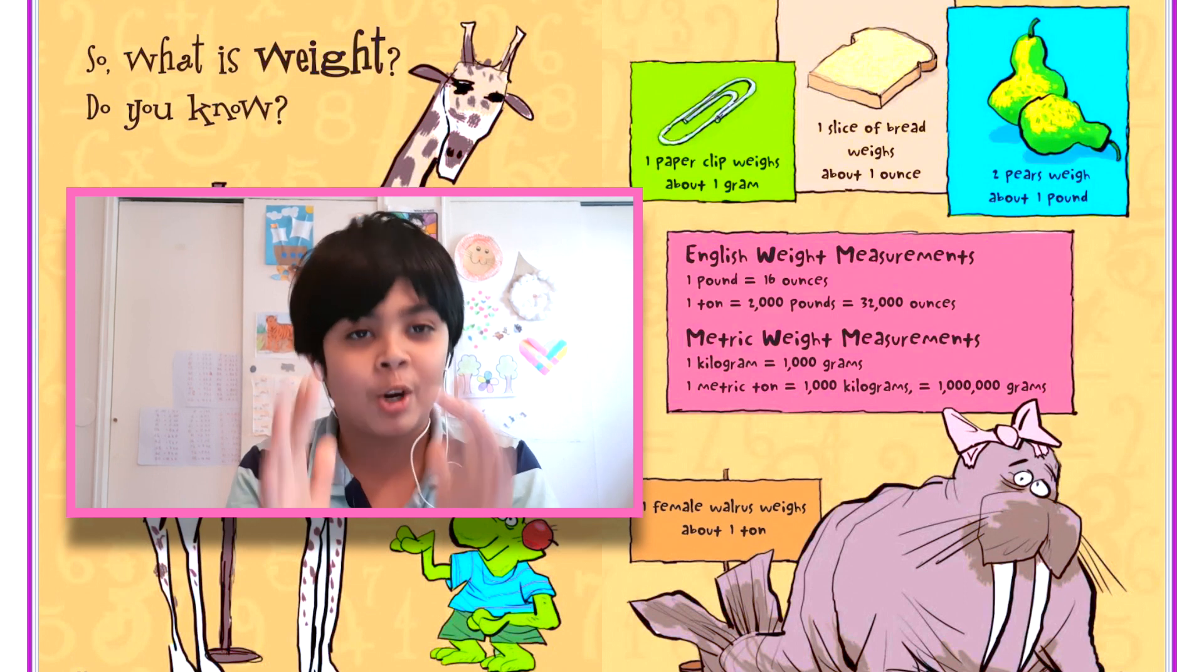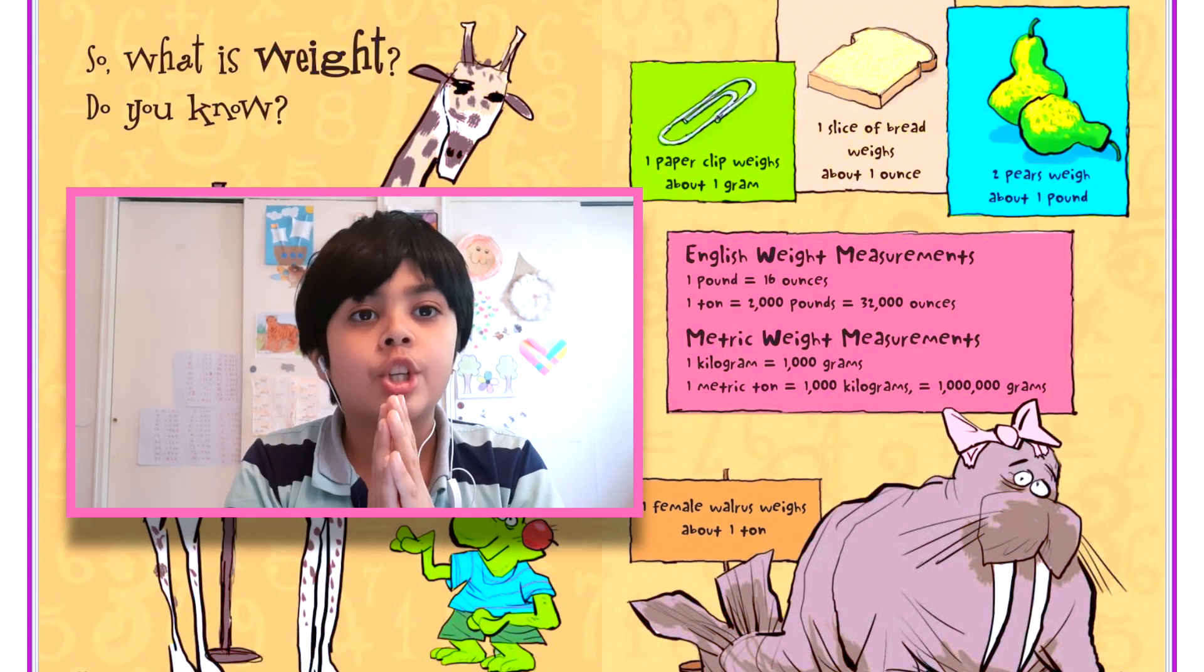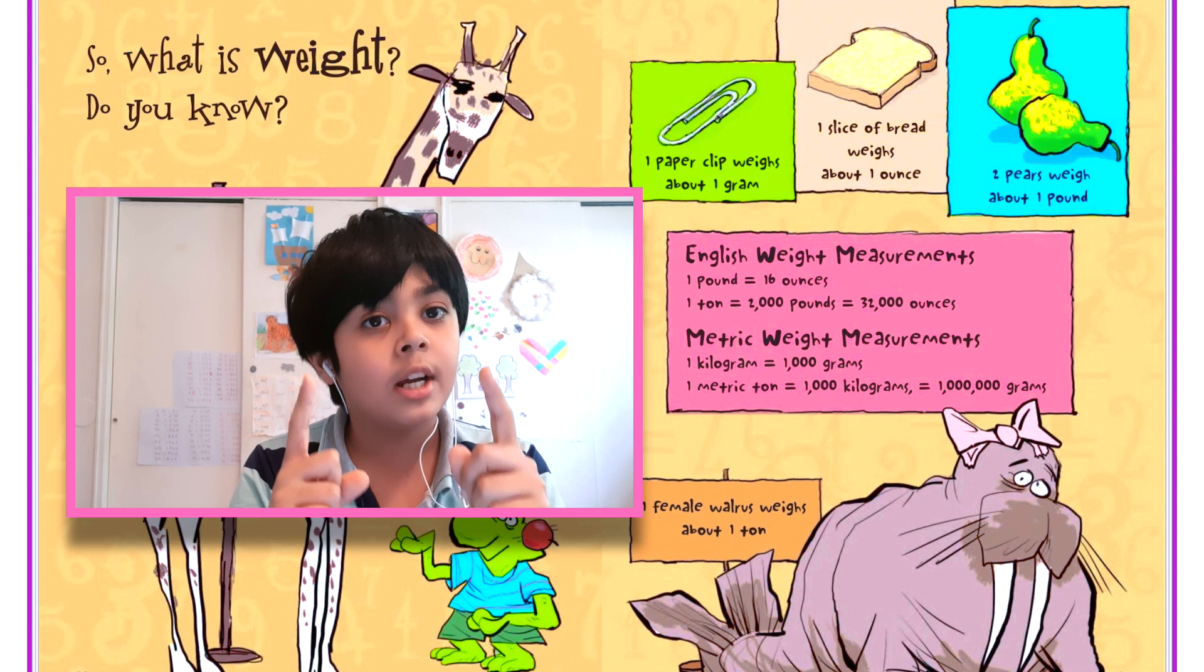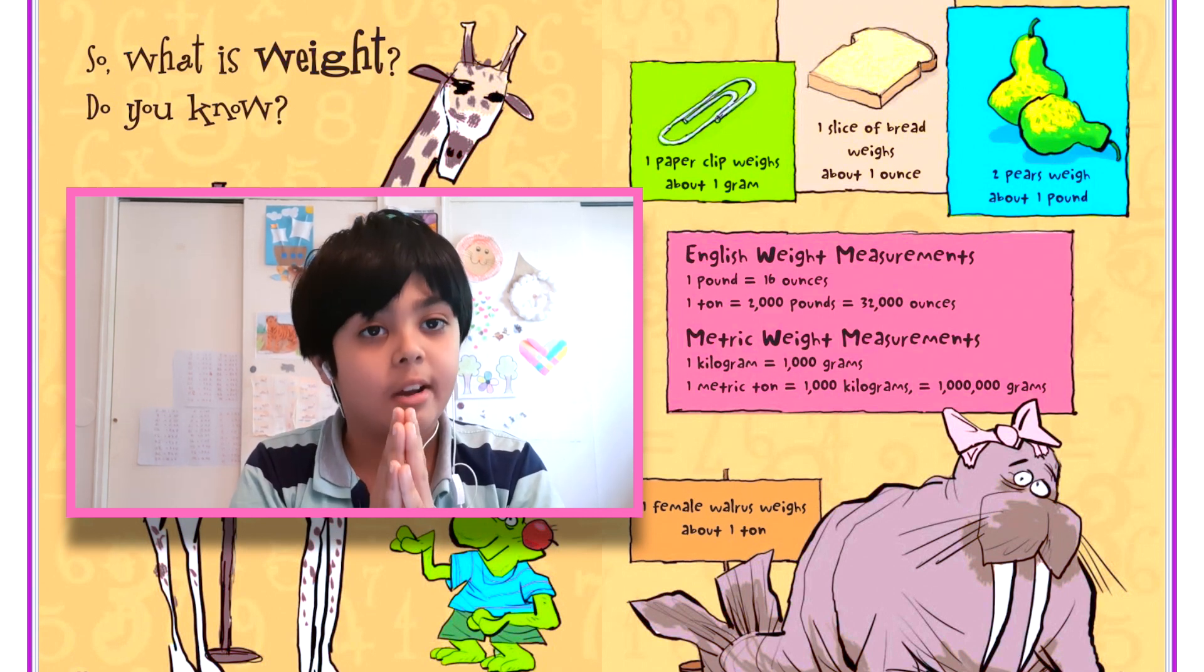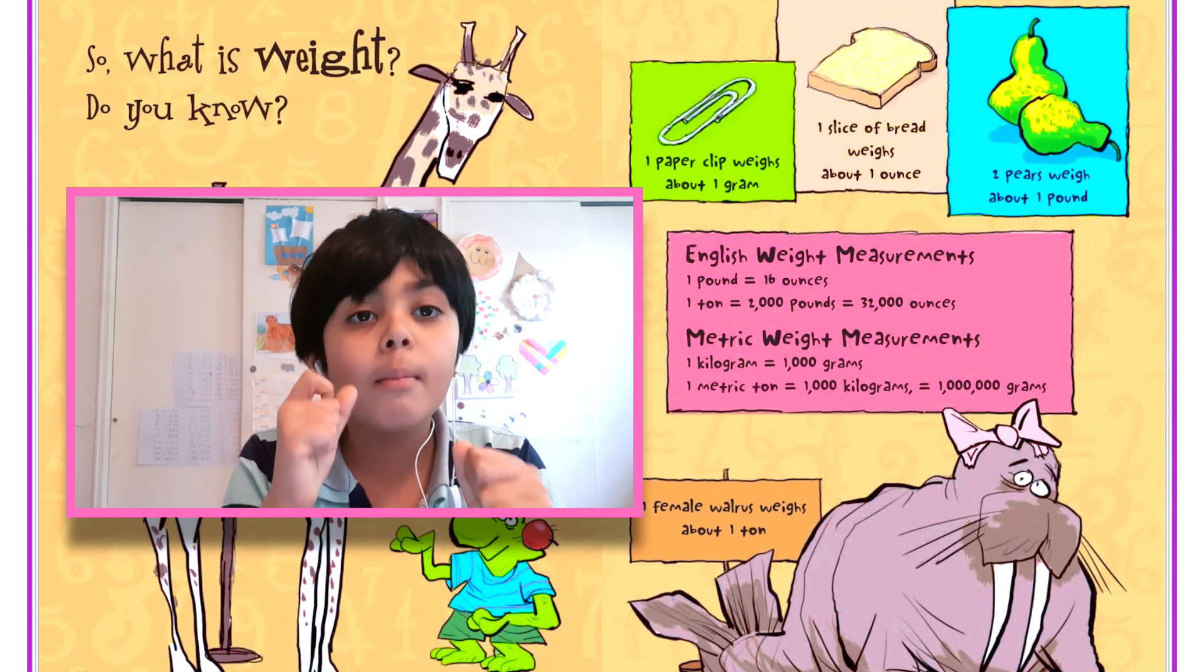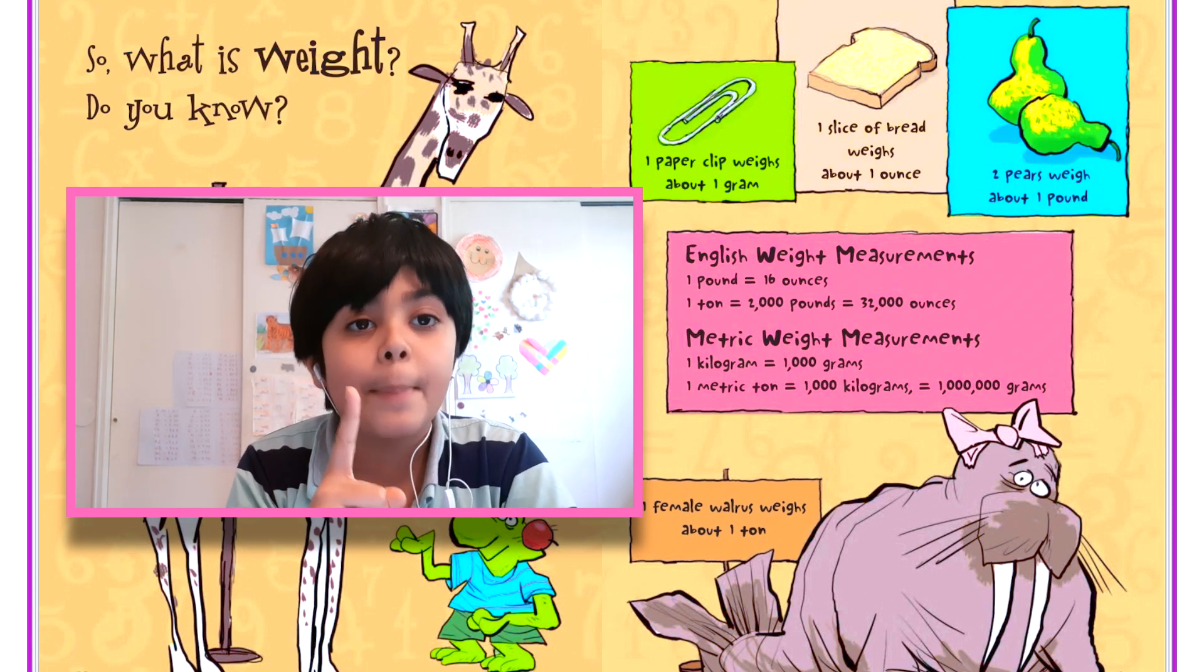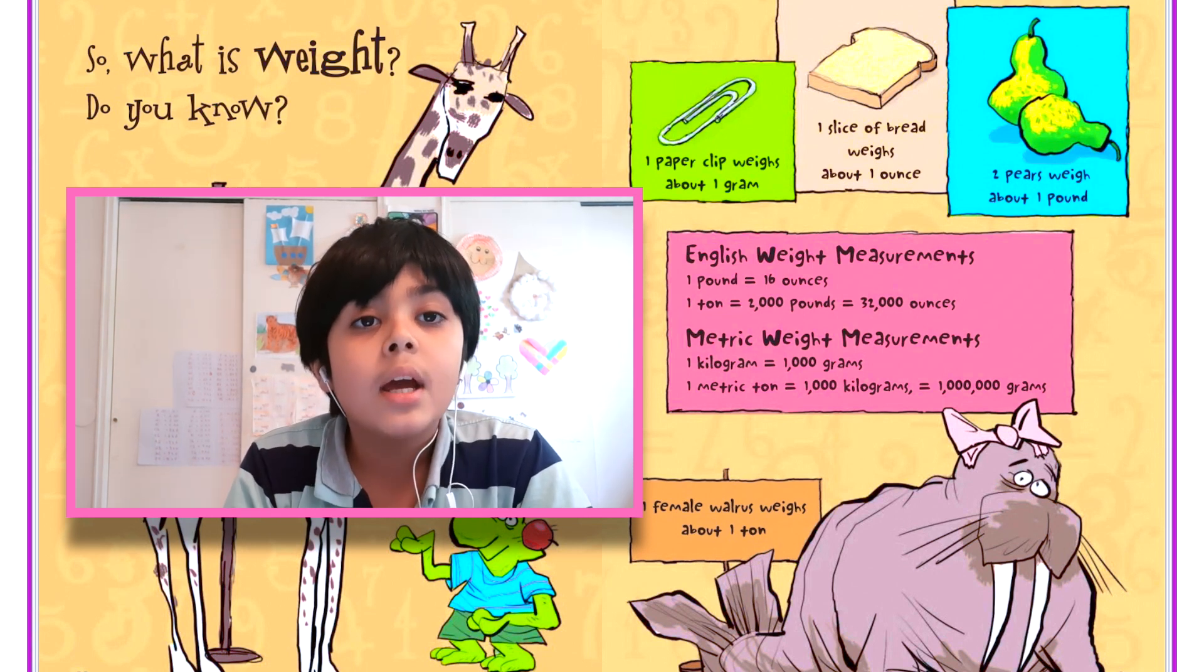I have questions for you guys. The first question is: what is weight? Do you guys remember? It was in the book. The second question is: how many ounces are in one pound, and how many pounds are in one ton?